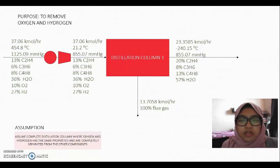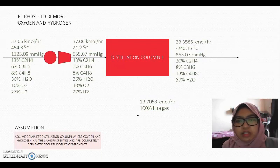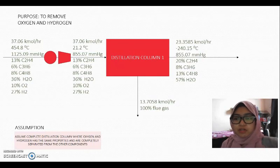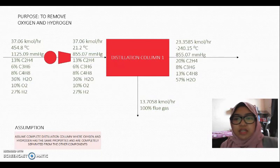The flue gas comes out at the bottom stream with the rate of 13.7058 kmol per hour. The product comes out at the top stream with the flow rate of 23.3585 kmol per hour, temperature of negative 240.15 degrees Celsius and pressure of 855.07 mmHg. Composition is 20% ethylene, 8% propylene, 13% butene and 57% water.